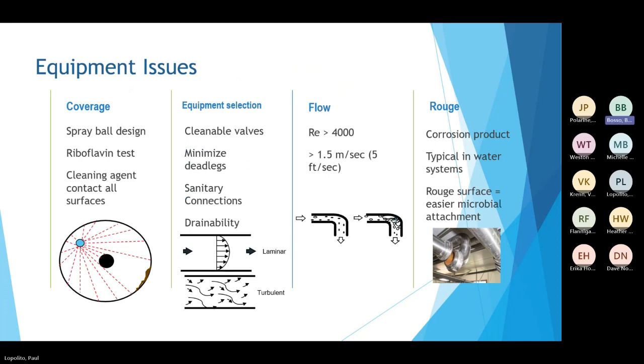With equipment, there are several categories to consider. The first is coverage. When looking at your piece of equipment, there's a mechanism for the coverage of the equipment. For example, a spray ball in a tank. During the FAT or other qualification activities, a riboflavin test is used to determine if a cleaning agent contacts all surfaces. As you can see in this graphic, there is a piece or part of the equipment that is not being contacted by the spray ball.